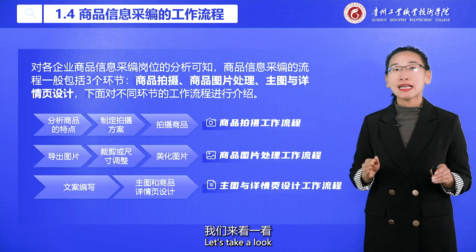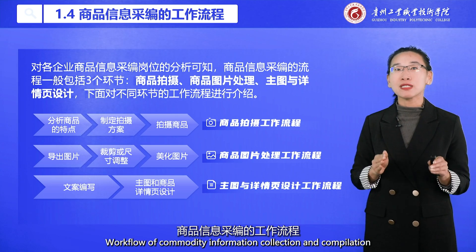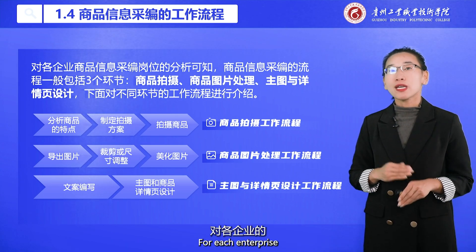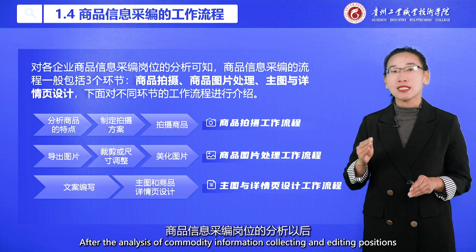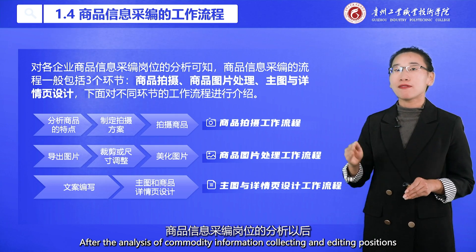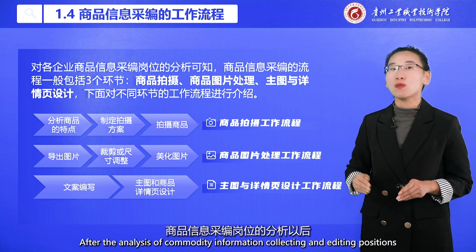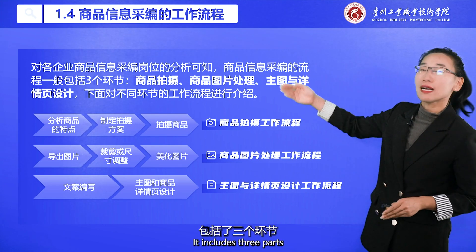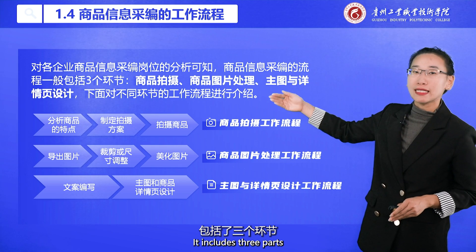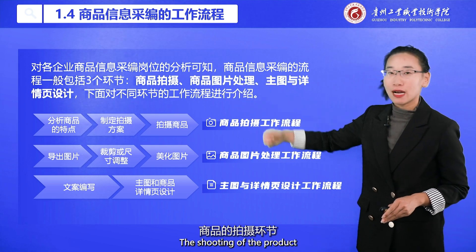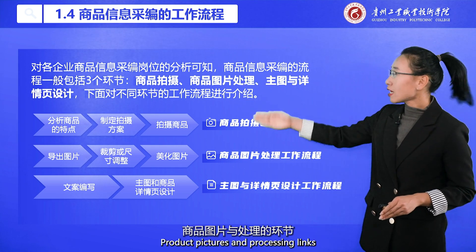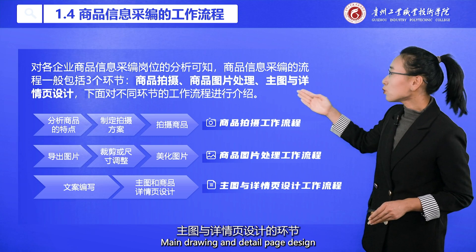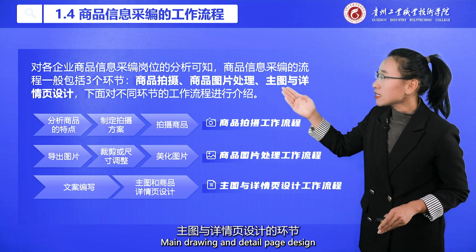Let's look at the workflow of commodity information collection and compilation. After analyzing commodity information collecting and editing positions across enterprises, we can identify the whole process, which includes three parts: the shooting of the product, product pictures processing, and main drawing and detail page design.